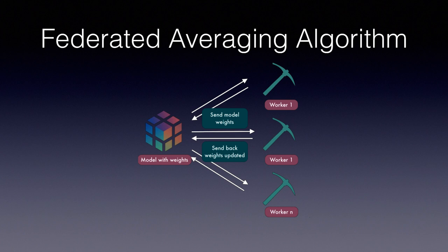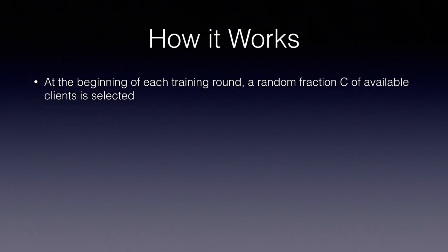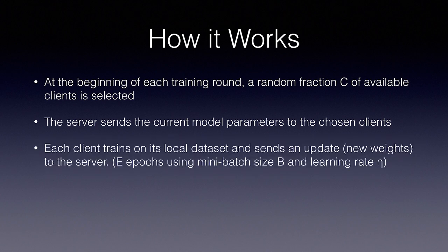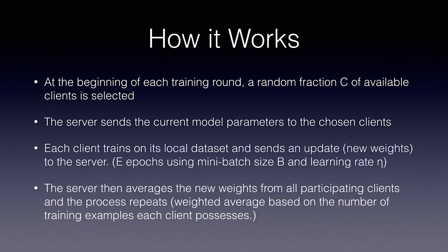Here's an overview of how it works. At the beginning of each training round, a random fraction C of available clients is selected. The server then sends the current model parameters to the chosen clients. Each client trains on its local dataset and sends an update — new weights — to the server. Each client trains for E epochs using mini-batch size B and learning rate η. The server then averages the new weights from all participating clients, and the process repeats. We use a weighted average based on the number of training examples each client possesses.